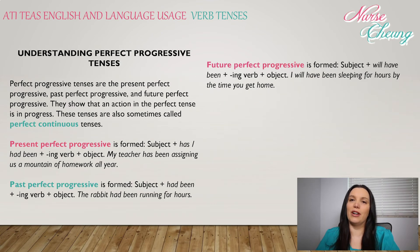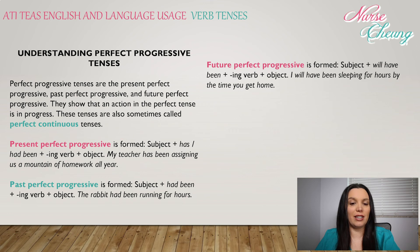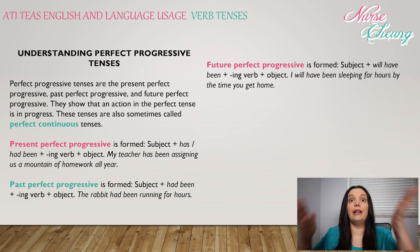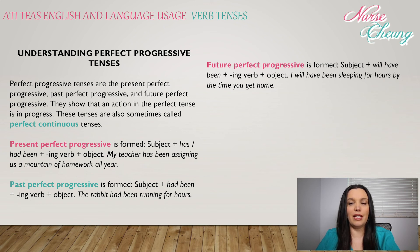Understanding perfect progressive tenses: the present perfect progressive, past perfect progressive, and future perfect progressive. They show that an action in the perfect tense is in progress, and are also sometimes called perfect continuous tenses. Present perfect progressive is formed: subject + has/have been + an -ing ending verb + object. For example: 'My teacher has been assigning us a mountain of homework all year.' Past perfect progressive is formed: subject + had been + an -ing ending verb + object. For example: 'The rabbit had been running for hours.'